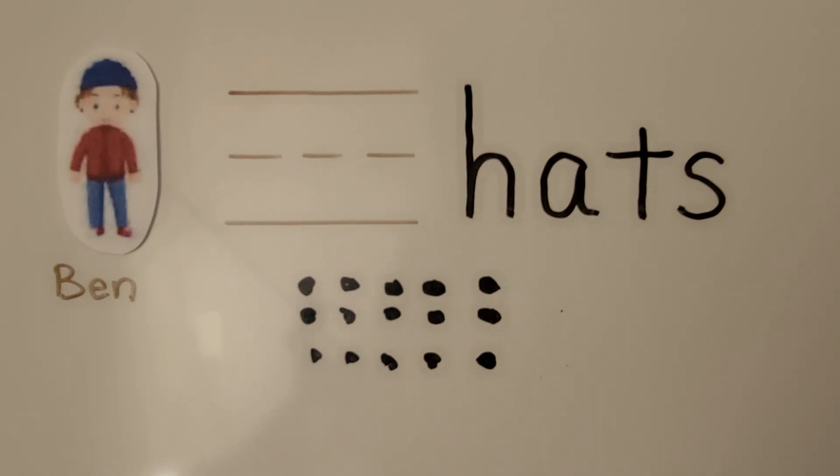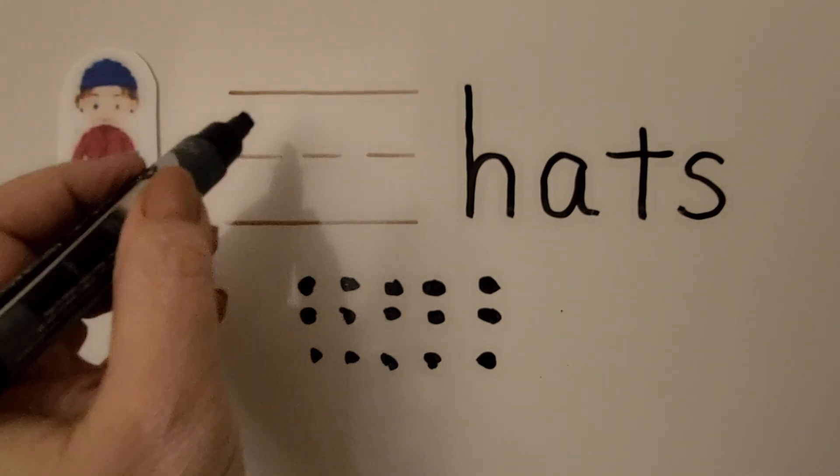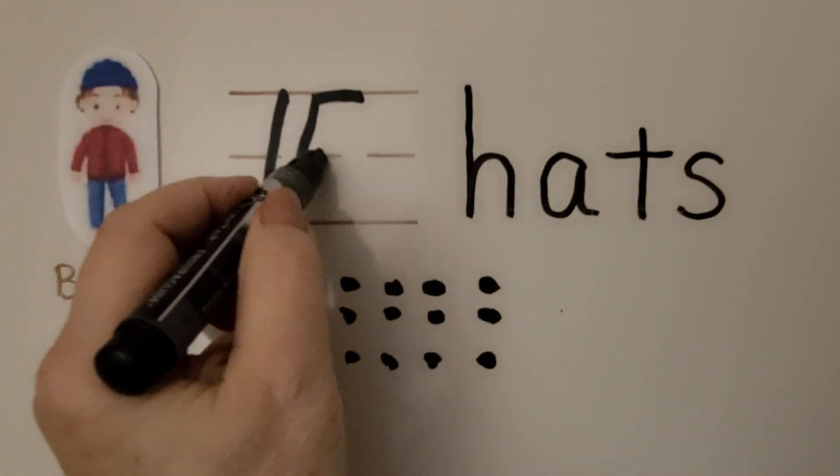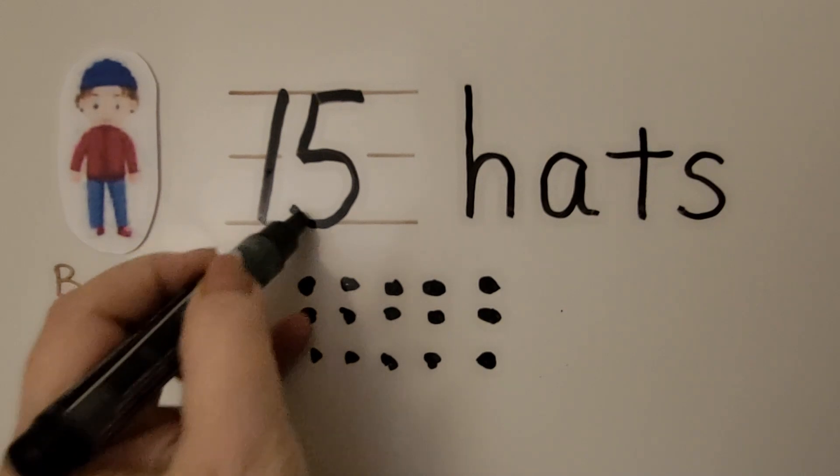We can count all of our dots to check our answer to see if it makes sense. We have 10, like in a 10 frame, 11, 12, 13, 14, 15. We can write the 15. We write a 1 with a 5 next to it.